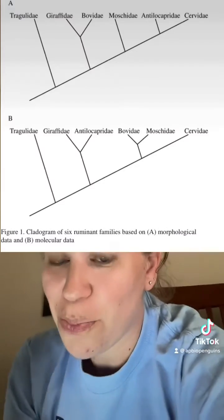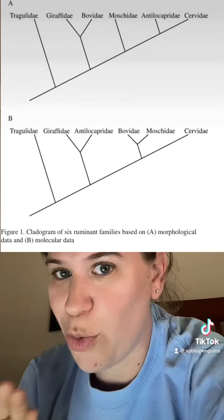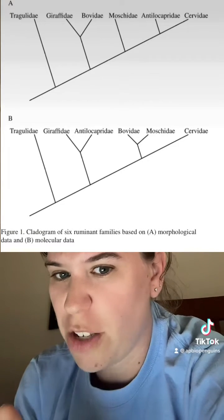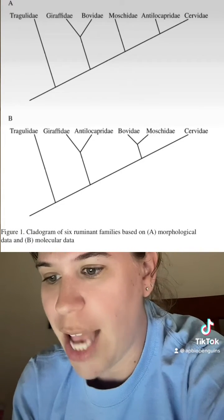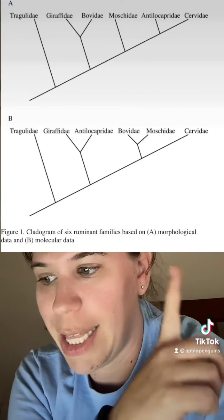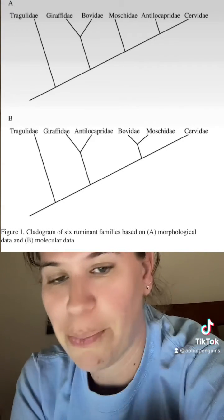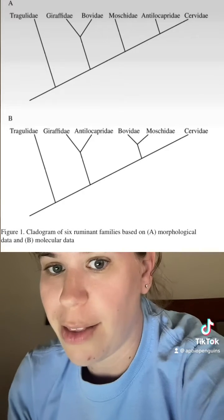I'm just going to simplify and just use the first letter in each of these names just to make life easier. So the question's asking us why the B is more closely related to the M than it is related to the G. If you look at the second diagram...